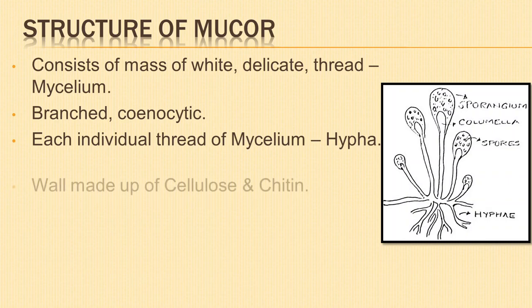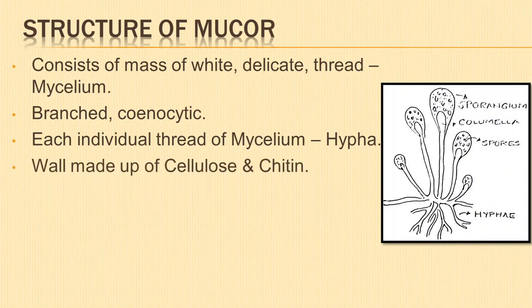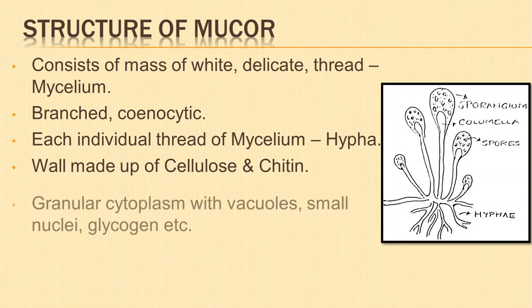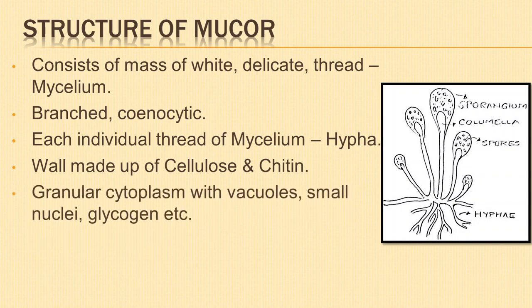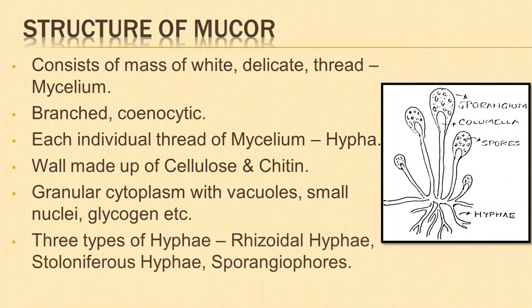Its wall is made up of cellulose and chitin. The granular cytoplasm contains numerous vacuoles, small nuclei, and reserve food — glycogen and oil fats. The hyphae are of three types: submerged or rhizoidal hyphae, prostrate or stoloniferous hyphae, and the vertical aerial hyphae or sporangiophores.